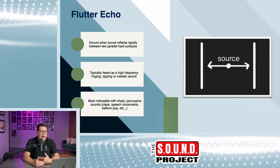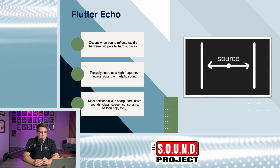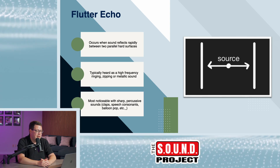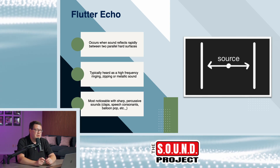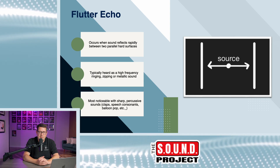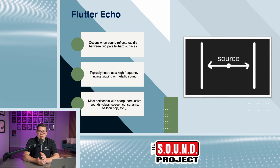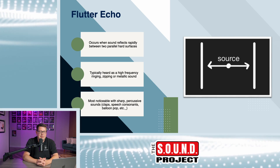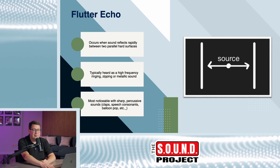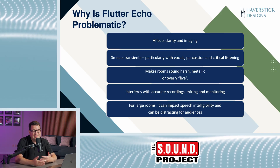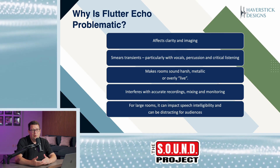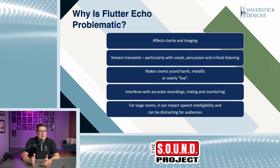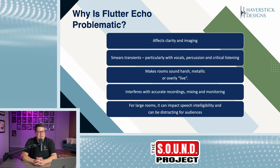Typically it's heard as a higher frequency, kind of a ringing or a zipping or a metallic sound — like a ping-pong ball bouncing back and forth. It's most noticeable with sharp and percussive sounds, something like a hand clap, speech consonants, or a balloon pop. Flutter echo can be kind of fun to hear, but if it's in a room where you're trying to record, or a performance space or auditorium, it can be distracting and not good for speech intelligibility.